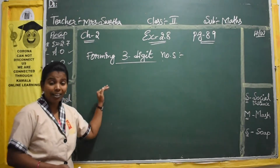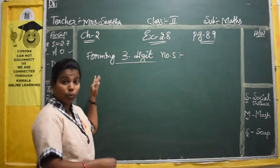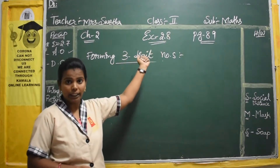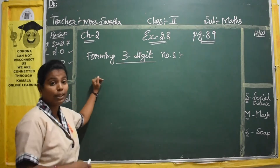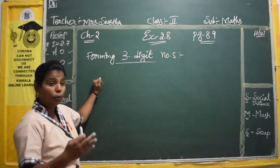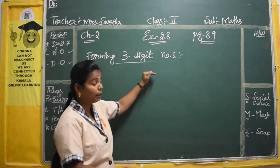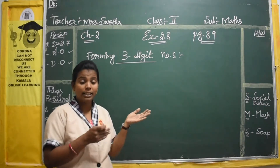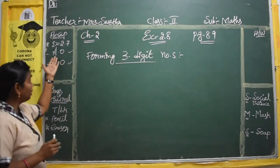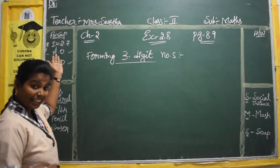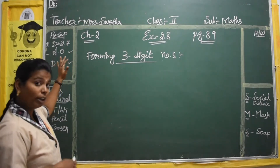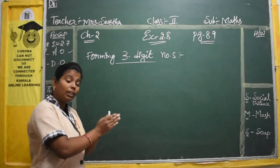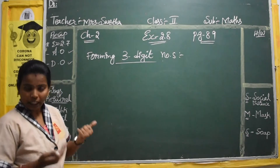First, I am going to tell you the method — the process you are going to follow in exercise number 2.8. In this exercise, we are going to form three-digit numbers. Like in the previous exercise, they arranged the numbers and gave them to us in the book. Here, you have to form the numbers yourself.